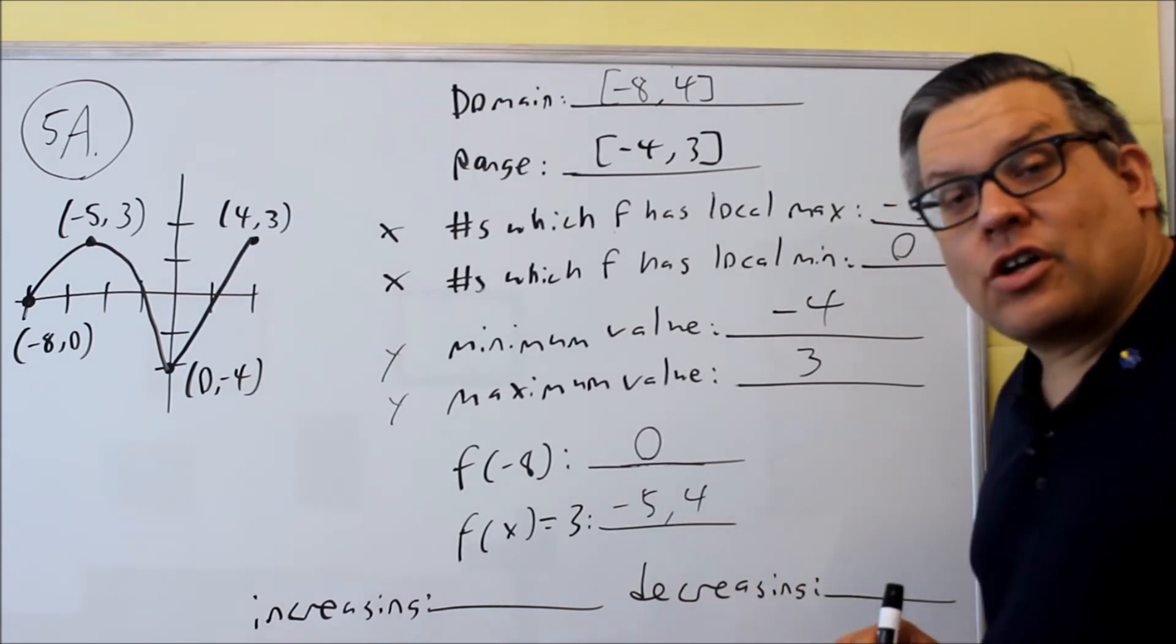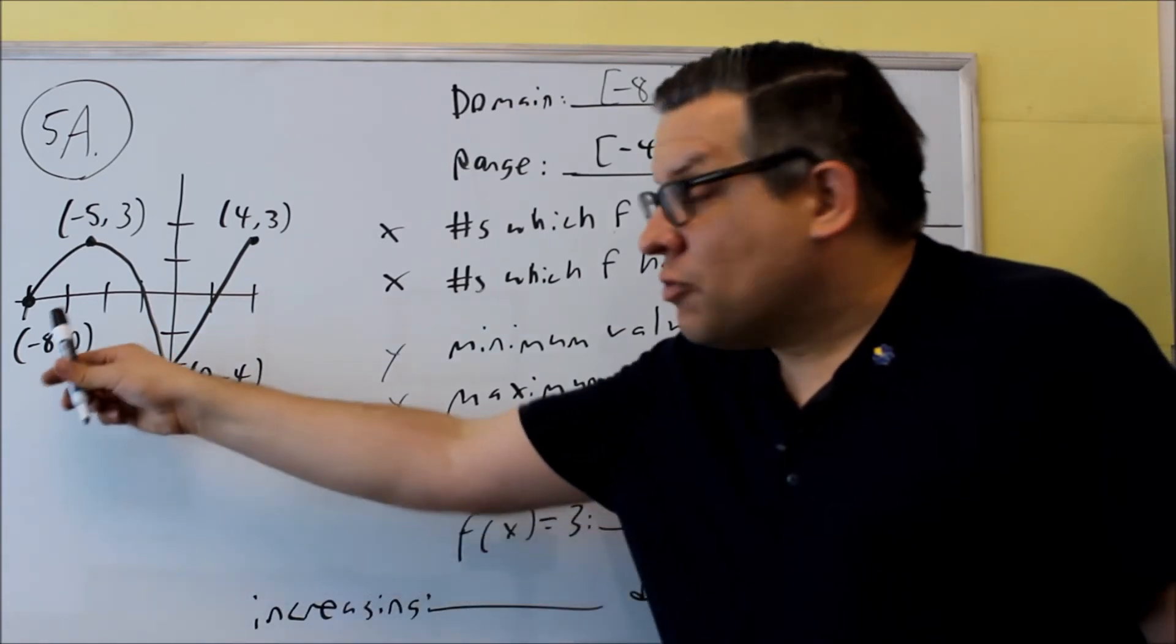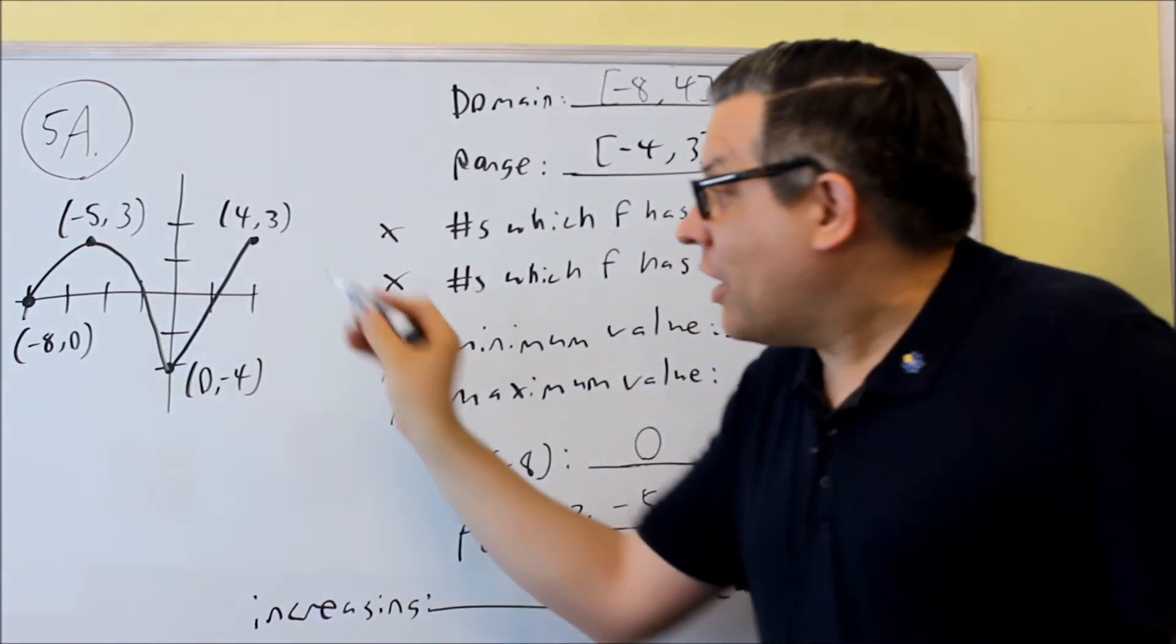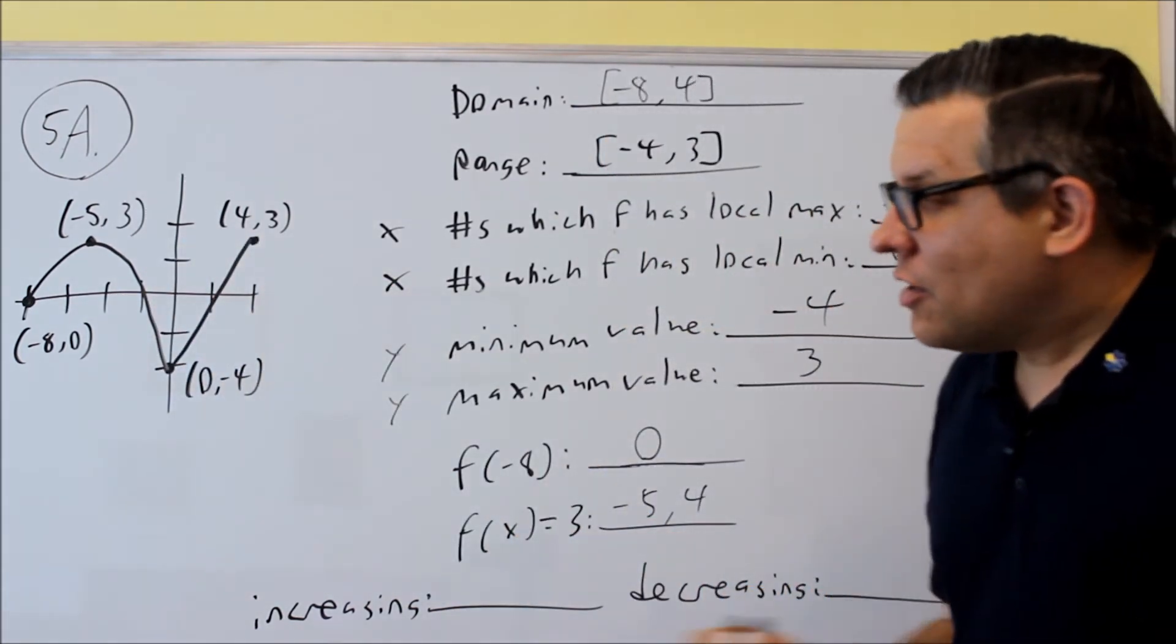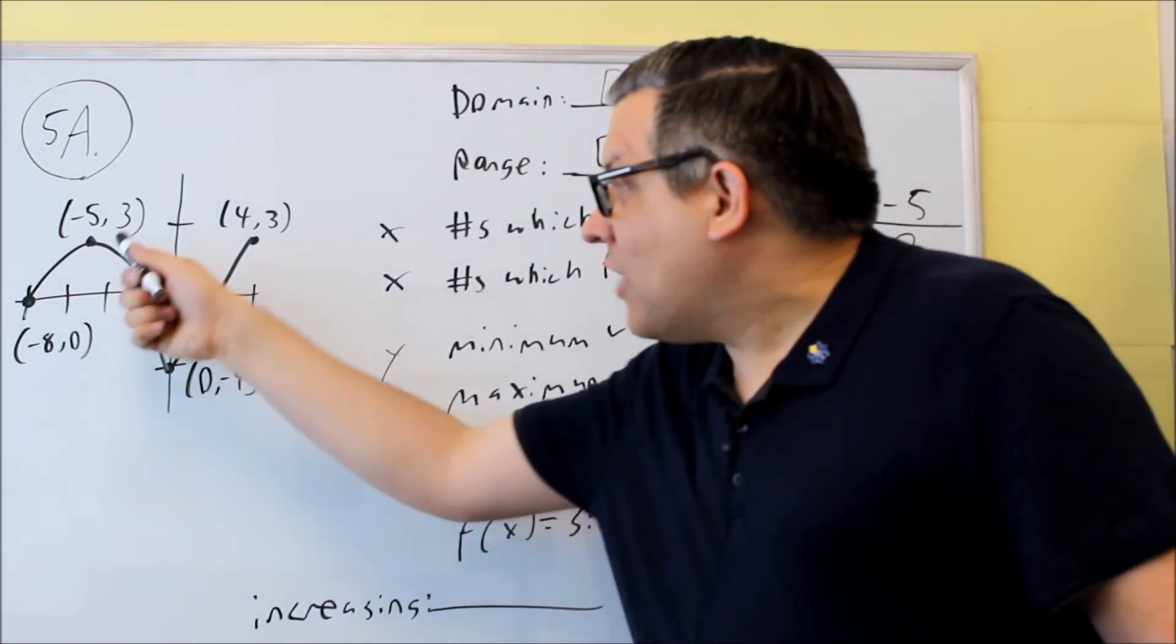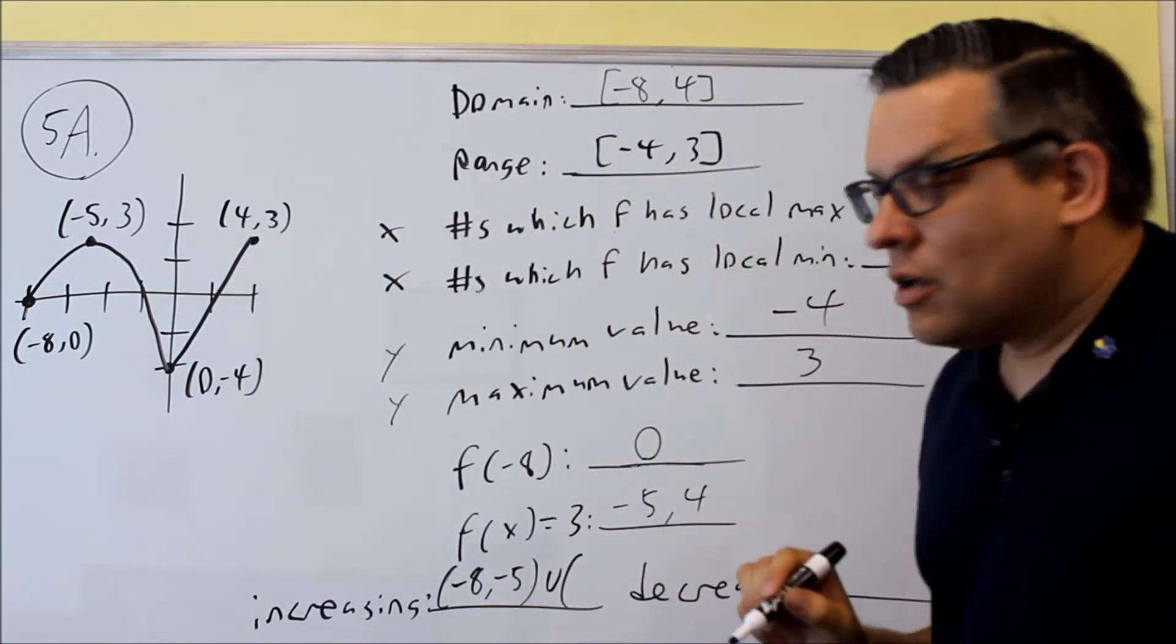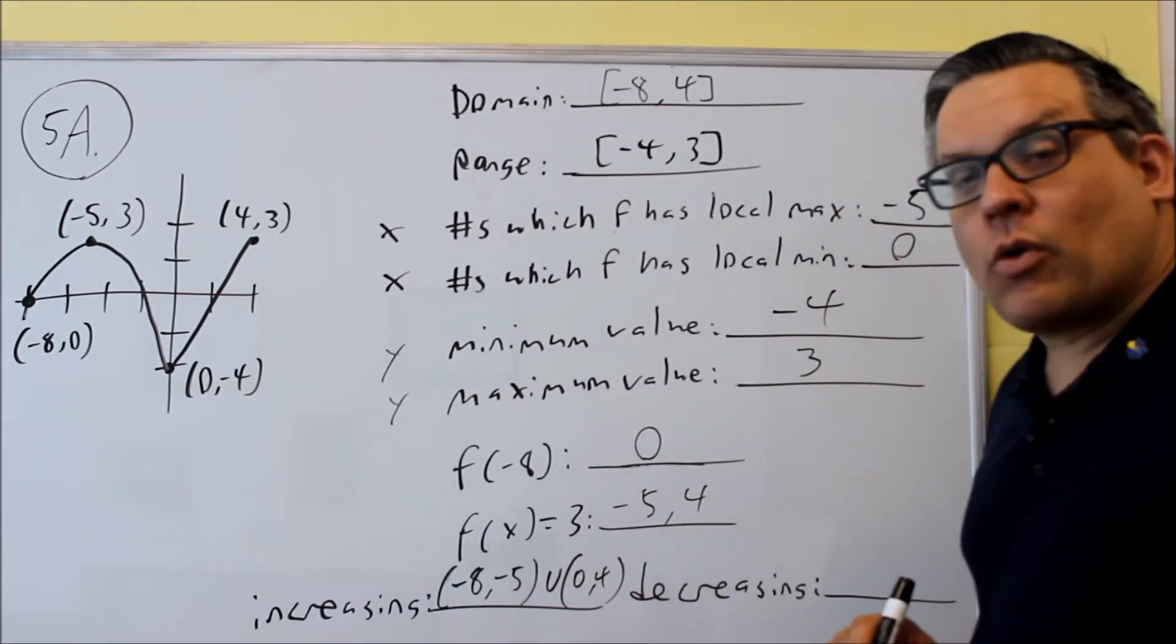The last one is going to ask for increasing and decreasing. Now increasing is as you move from left to right, you're looking for the part of the graph that's going uphill. So as I move from left to right, I see this section is going uphill. And I also see this section is going uphill. So I have two different places where the graph is going uphill. The first spot I'll have increasing is going to be between negative 8 and negative 5. I'm also going to have another section here with a straight piece. That's going to be between 0 and 4. So between 0 and 4, that's another spot where it's increasing.